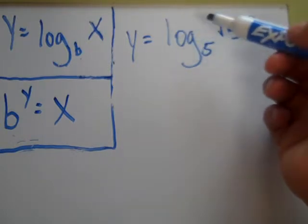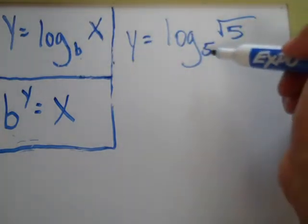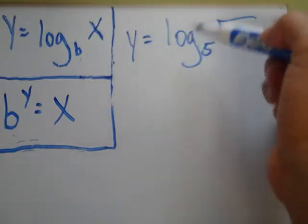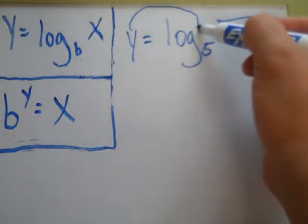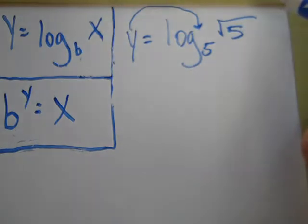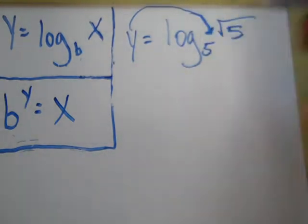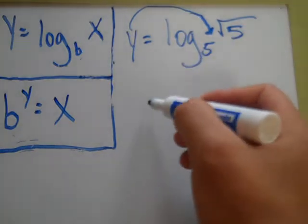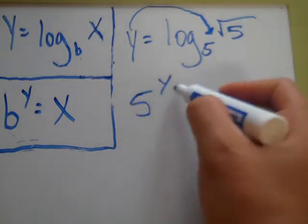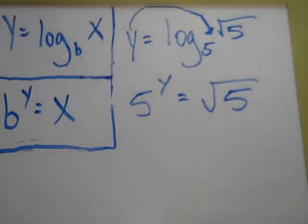And again, anytime that you got something like this, whatever's on the other side of the equal sign, they're just asking you what the exponent is. You know, more accurately, like that. So, 5 to the y power equals the square root of 5, right? So it's just asking you 5 to what power equals the square root of 5.